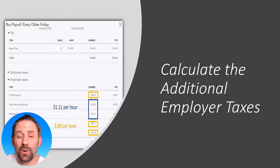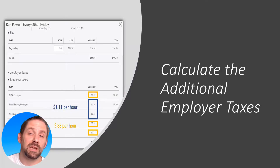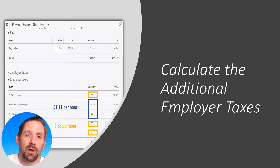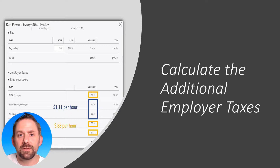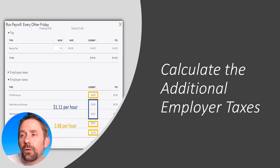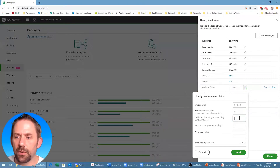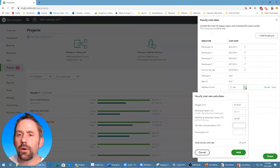These numbers are going to change — there are quite a few variances. One factor is the total wages earned per year; there are thresholds that, once met, mean certain taxes are no longer deducted. This is one of the complications of this method because it's not perfectly accurate. Towards the end of the year, if certain employer-side taxes have phased out but you haven't updated the rate, you would actually be over-expensing cost to a project. These numbers are specifically used to generate project profitability within Projects.